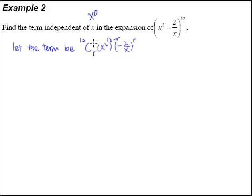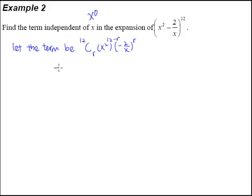We have a blueprint of something like this. Depending on what is the value for r, when you substitute in values for r, you will get each individual term. For example, when you substitute r equals 3, you will get the 4th term; when you substitute r equals 5, you will get the 6th term. But the problem is we have no idea where the constant term is, where the term independent of x is — is it the 5th term, the 6th term? We have no idea, and that's why we don't know what our r is. So the first thing we have to do is find out the value of r. The only thing we know is that the term we want to find has got x to the power of 0.